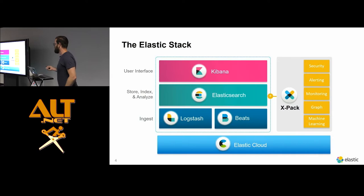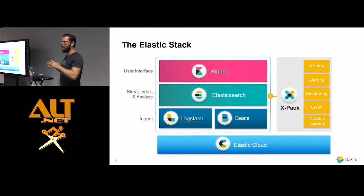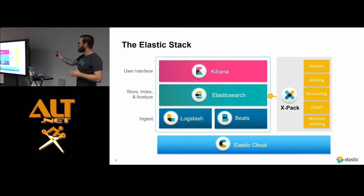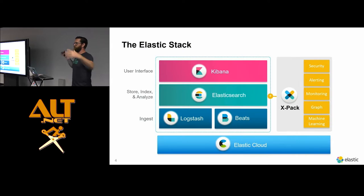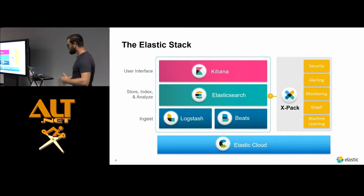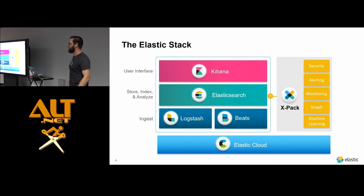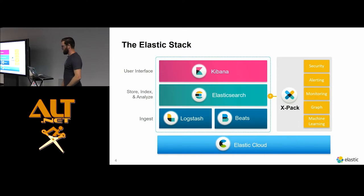Then there's an ingest layer with two components. There's Logstash, which I would describe as a centralized ETL pipeline tool - very flexible, doesn't have to be used with Elasticsearch. You can think of it as three components: a set of inputs, a set of filters which decide what to do with data - they might extract or enrich it with data from other sources - and then outputs. You can output that enriched data to Elasticsearch, to file, to Kafka, to Azure queues, and many more.